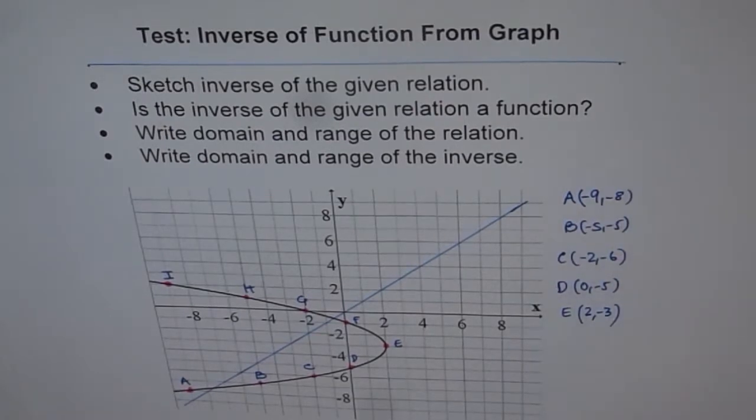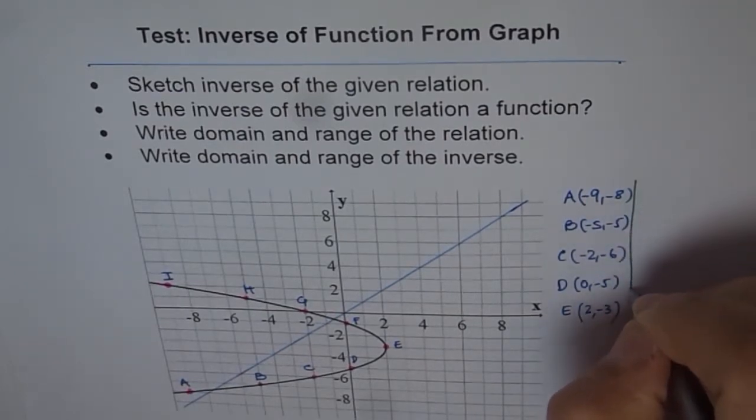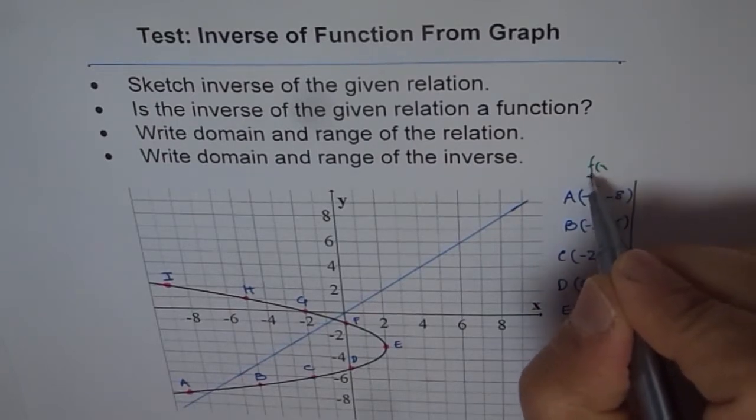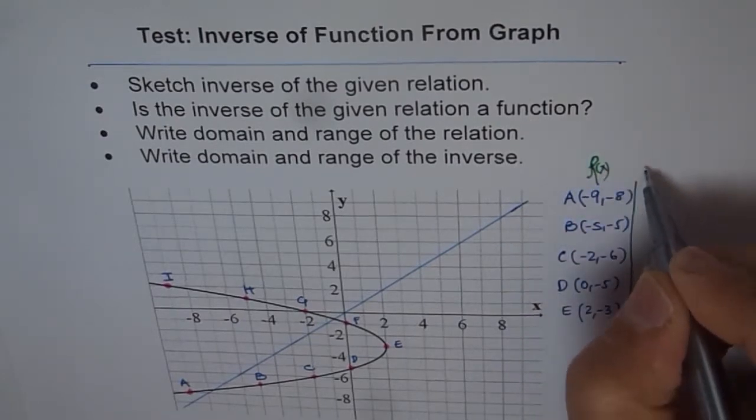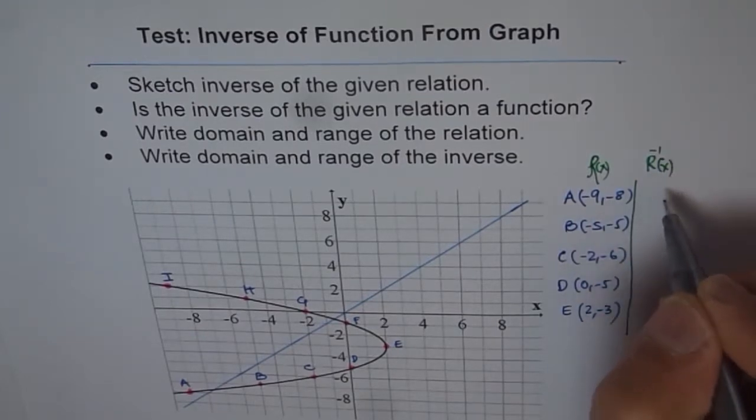So once you get a set of points, then you interchange these points and get the inverse. So let's just say this is our function, F of x. I should not write, this is not a function. So let's say relation. Let me write relation Rx. And then we do relation inverse. Inverse of the relation. Let's write R for relation.